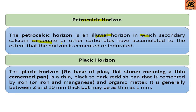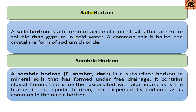The next one is the petrocalcic horizon. The petrocalcic horizon is an illuvial horizon in which secondary calcium carbonate or other carbonates have accumulated to the extent that the horizon is cemented or indurated. The next one is the placic horizon. The placic horizon — from plaques meaning flat stone — is a thin, black or dark reddish pan cemented by iron and organic matter. It is generally between 2 and 10 millimeters thick but may be as thin as one millimeter.